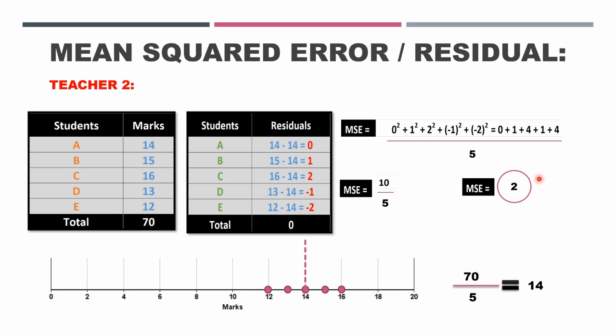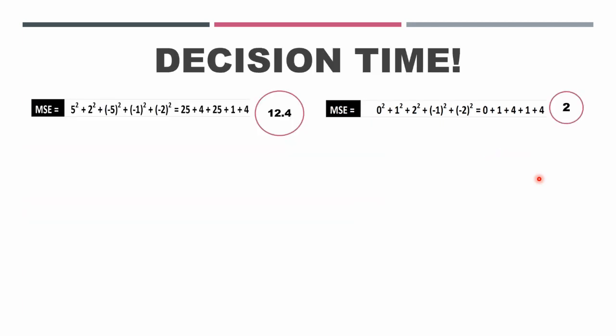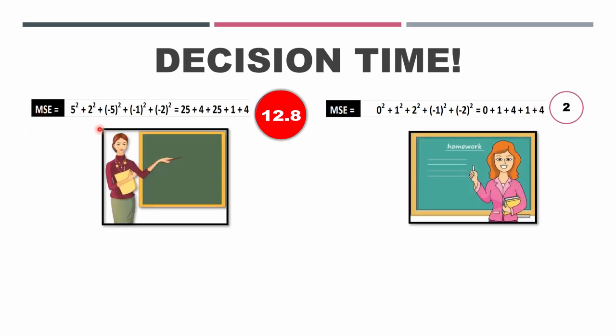So voila, he has some different observations for teacher 1 and teacher 2. Finally, now it's decision time. The principal is seeing that the mean squared error for teacher number 1 is 12.4, but it's 2 for teacher number 2, which is less.